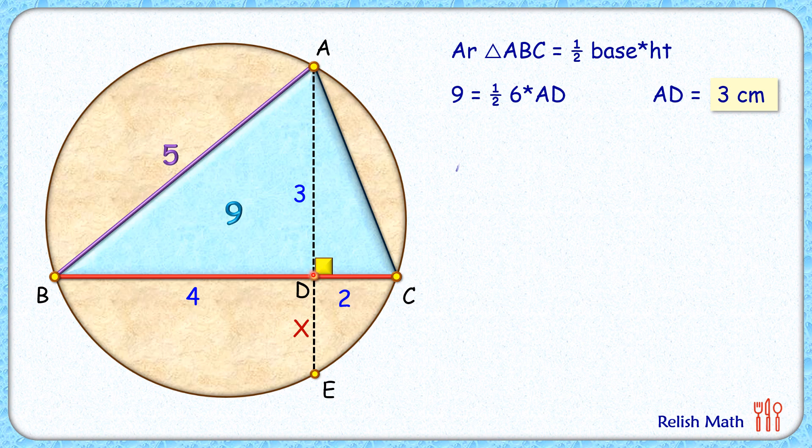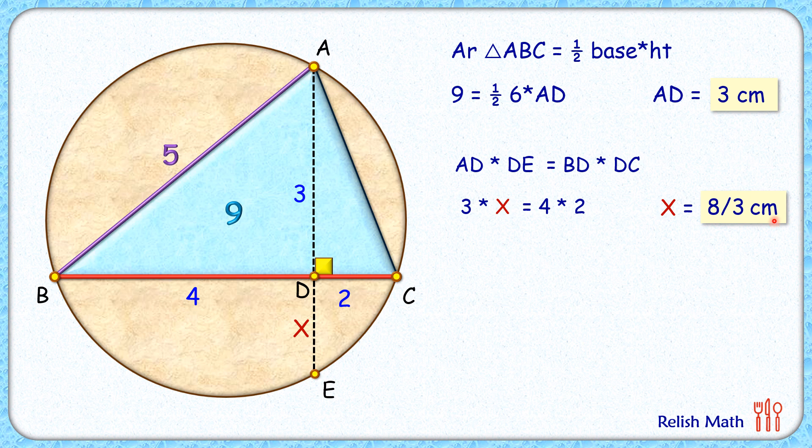...AD times DE equals BD times DC. Putting the values here: this is 3, this is x, this is 4, and this is 2. Solving, we get the value of x as 8/3 cm. Now to find the radius, we'll apply perpendicular chord theorem.